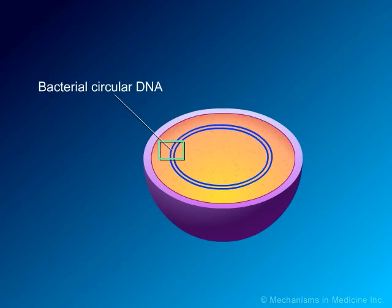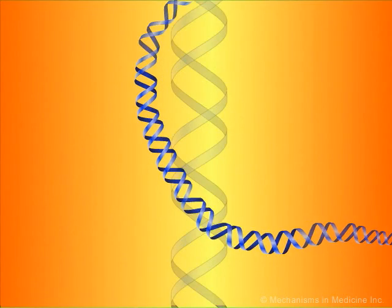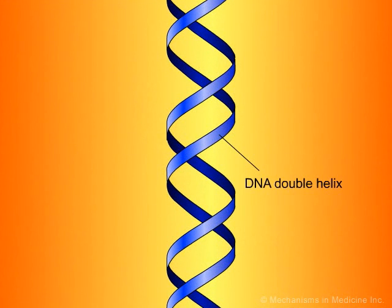Bacteria replicate by a process known as binary fission, whereby one bacterium separates into two new daughter cells. However, before this can occur, the bacterium must make an identical copy of its complete circular DNA. DNA replication requires that the two strands of DNA separate so that the genetic code of the bacterium can be read and a new complementary strand can be created for each of the original strands.